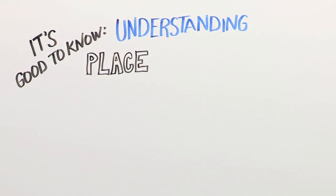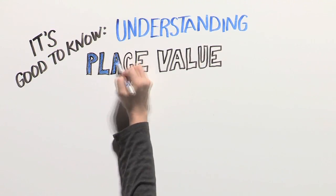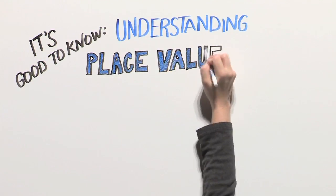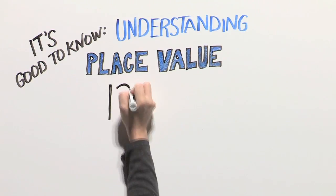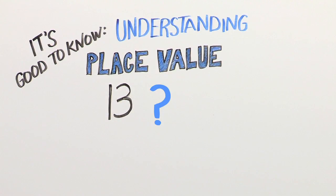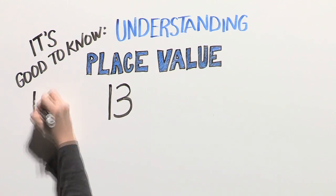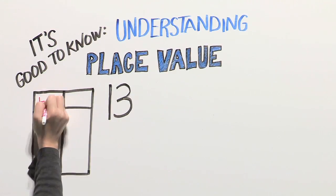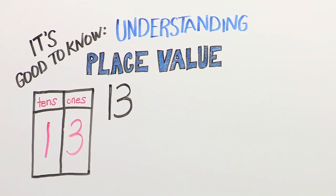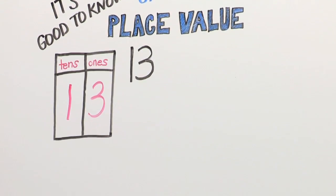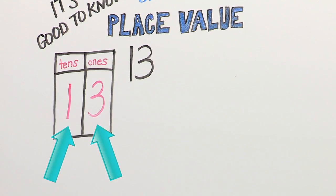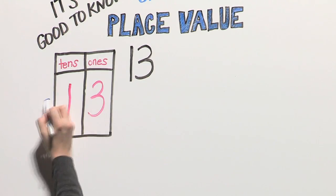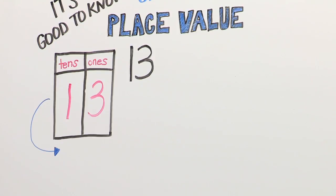A very important concept your child learns in first grade is place value. Let's look at the number 13. What does 13 really mean? We can write 13 in a place value chart. Now we see that 13 is one ten and three ones.